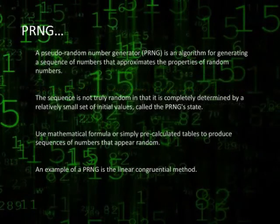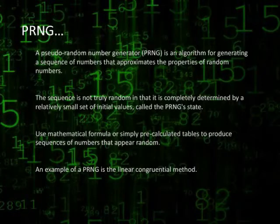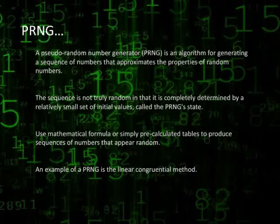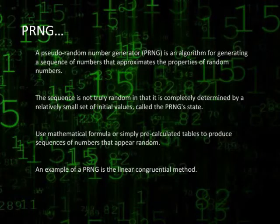A pseudo-random number generator or PRNG is an algorithm for generating a sequence of numbers that approximates the properties of random numbers. The sequence is not truly random in that it is completely determined by a relatively small set of initial values called PRNG states.